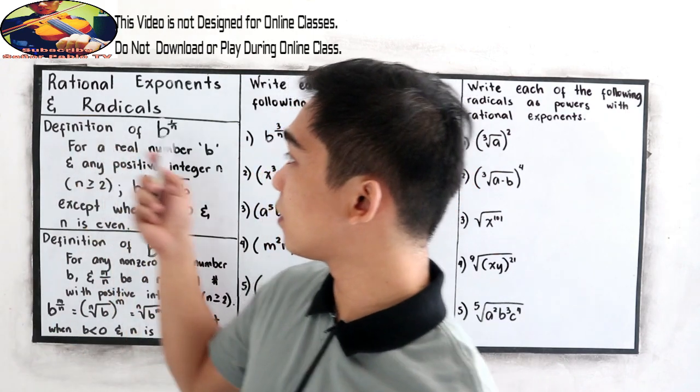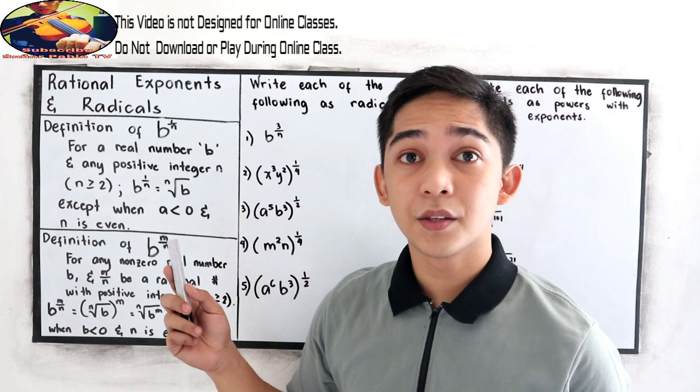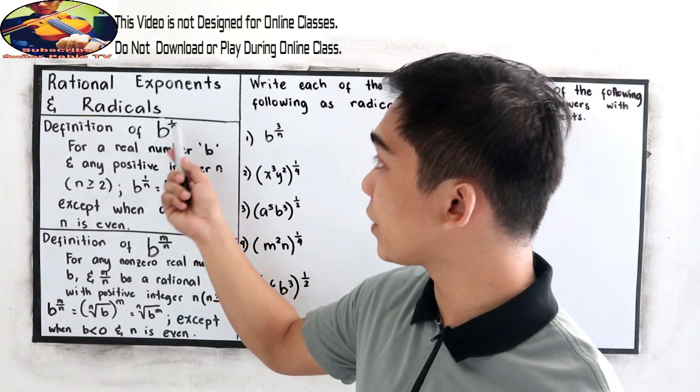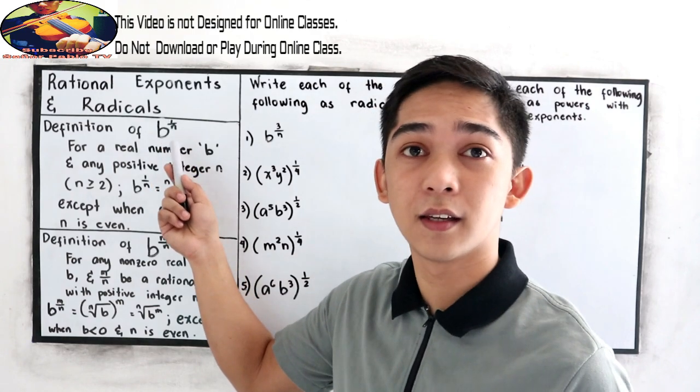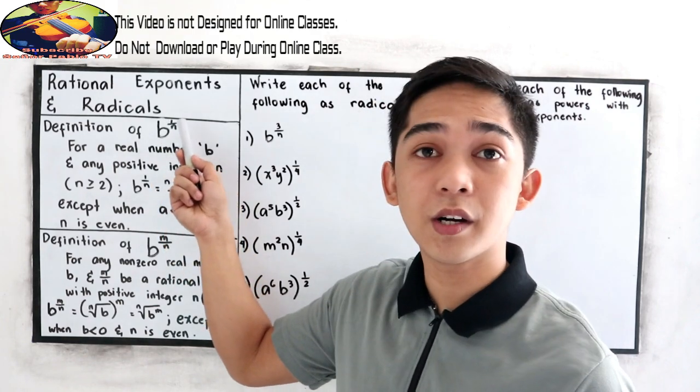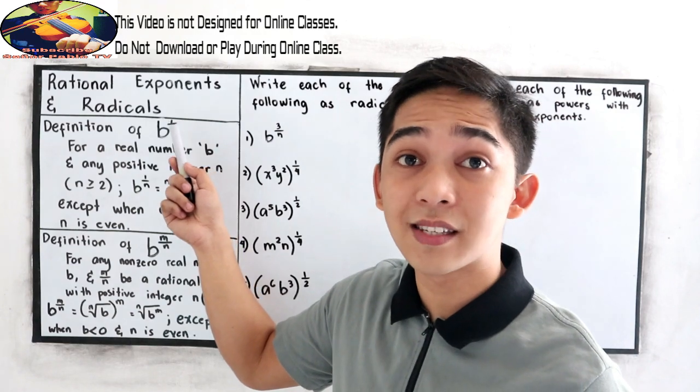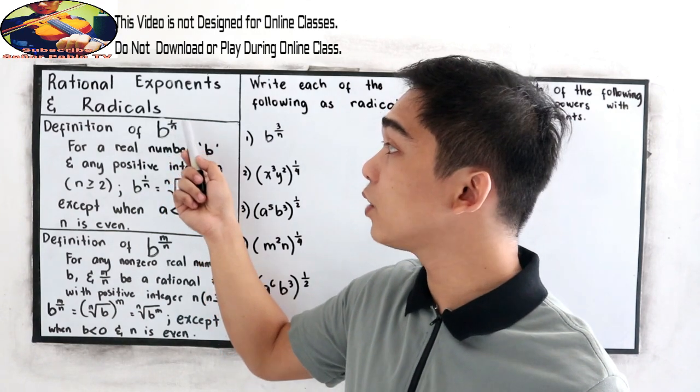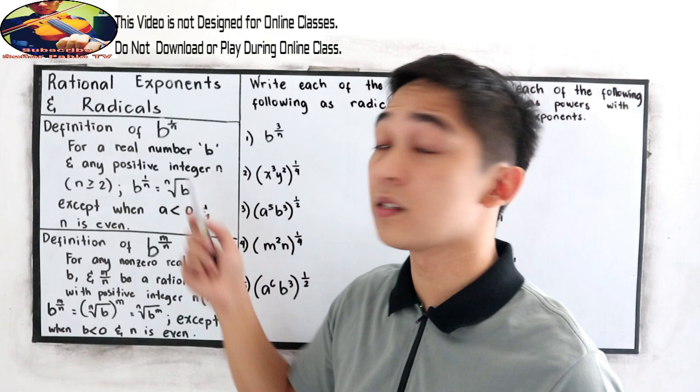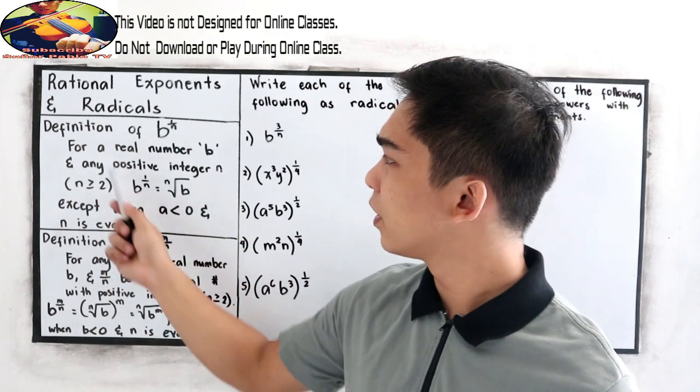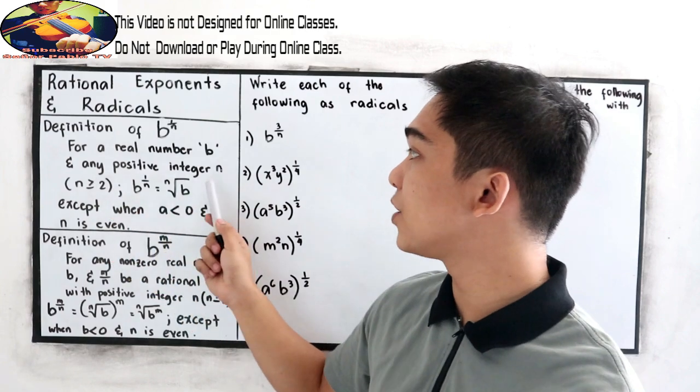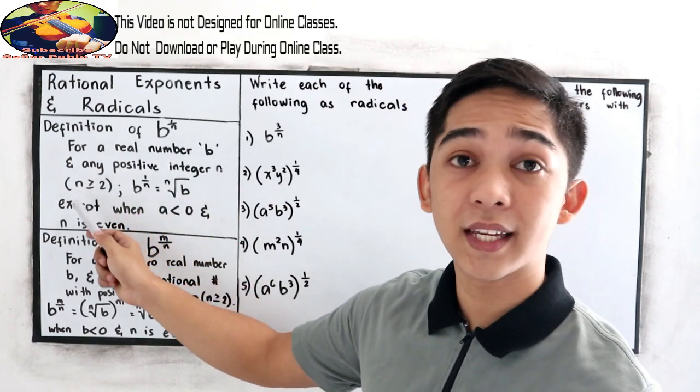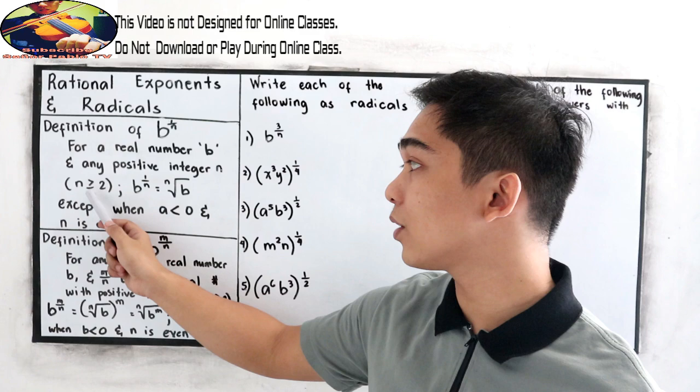We have the following definition. Definition of B raised to 1 over N. Notice that our exponent is in rational form, 1 over N, and B is our base. For a real number B and any positive integer N, wherein N is greater than or equal to 2.